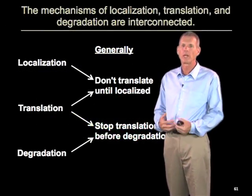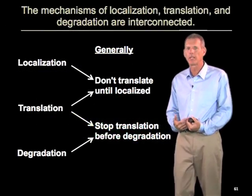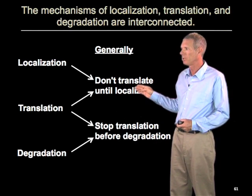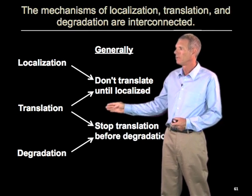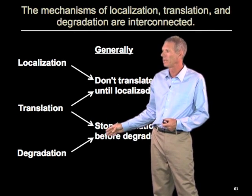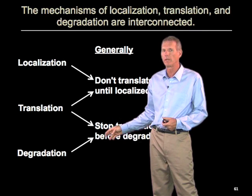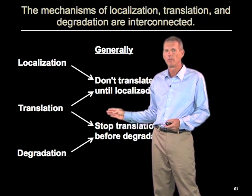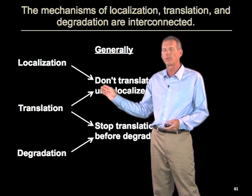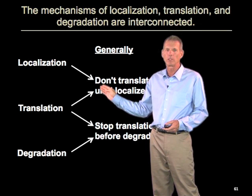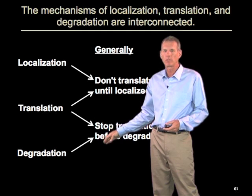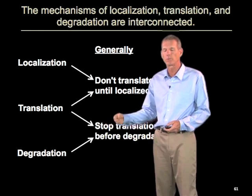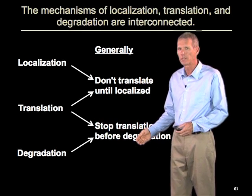One principle that's emerged from studying these is that they're actually all interconnected, with localization requiring the message to be translation-repressed until it's localized, with translation being related to degradation because you stop translation before you degrade it. The proteins involved in regulation of translation can play multiple roles in repressing translation until localized, stopping translation for degradation, or repressing translation for mRNA storage.